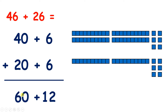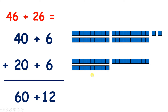So now we have 60 plus 12. But remember, the number 12 is made up of 1 ten and 2 units. So we can regroup these 12 units into 1 ten and 2 units. Now you can see we have 7 tens and 2 units. So 60 plus 12 is 72.